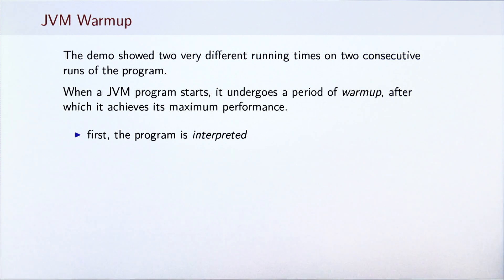Initially, the demo showed two very different running times on two consecutive runs of the program. After doing more measurements, we observed several other effects. We noticed first-hand that when a JVM program starts, it undergoes a period of warm-up, after which it achieves its maximum performance. First, the program is run in the interpreted mode. Here, the bytecodes which are the outputs of the Scala compiler are executed directly in a software component called the interpreter. Then, parts of the program are compiled into machine code.